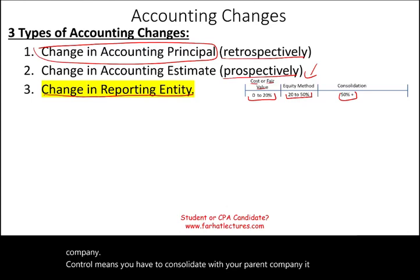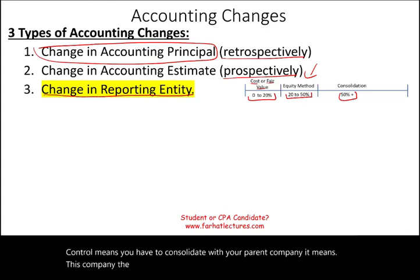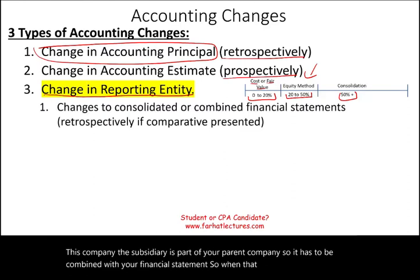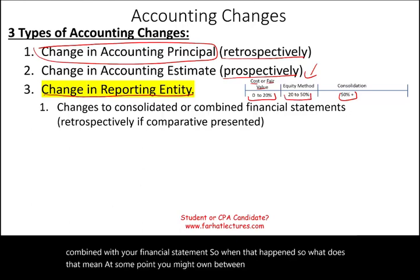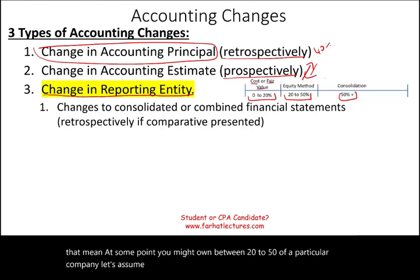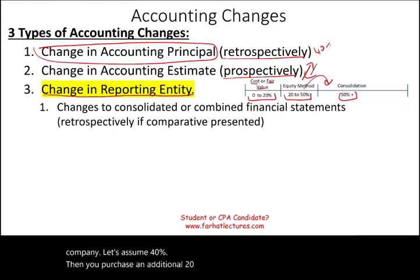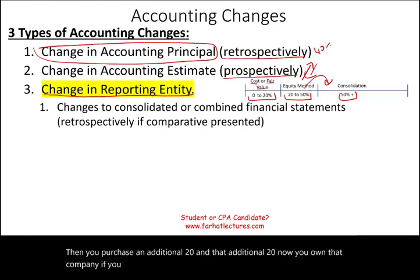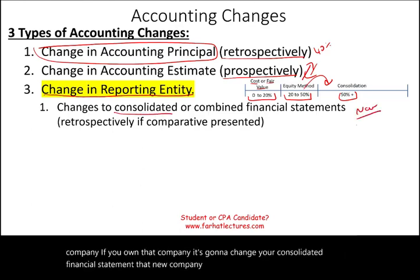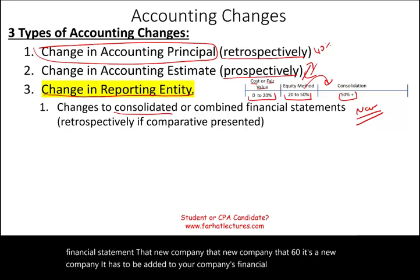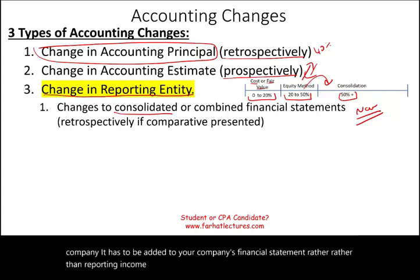It means this company — the subsidiary — is part of your parent company, so it has to be combined with your financial statement. At some point you might own between 20 to 50 percent, let's assume 40 percent. Then you purchase an additional 20 percent, and now you own that company. If you own that company, it's going to change your consolidated financial statement. That new company — that 60 percent — has to be added to your company's financial statement rather than reporting income and dividends as part of your investment. And that's a substantial change.